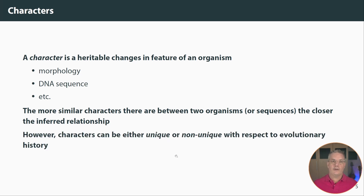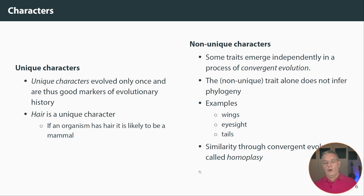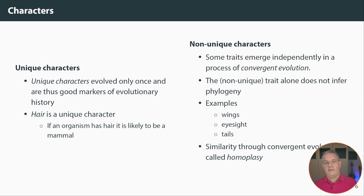But when we look at characters, we have to make a distinction as to whether those characters are unique or non-unique. This is an important distinction. A unique character is something that has evolved only once — and because it's evolved only once within the tree we're considering, it is a good marker of evolutionary history. The characters on that earlier tree are unique characters; hair is one such character. If an organism has hair and mammary glands, it's likely to be a mammal.